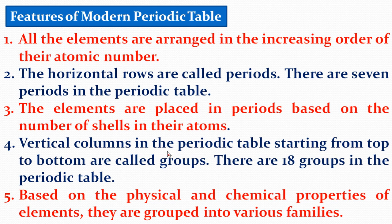The vertical columns in the periodic table, from top to bottom, are called groups. There are 18 groups in the periodic table. Based on the physical and chemical properties of elements, they are grouped into various families.